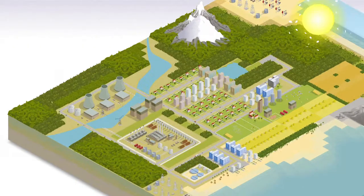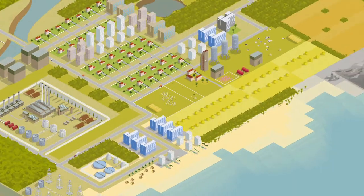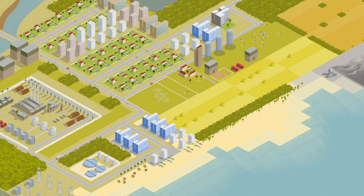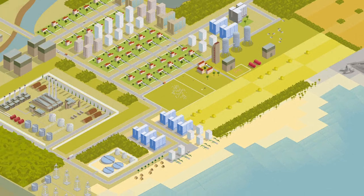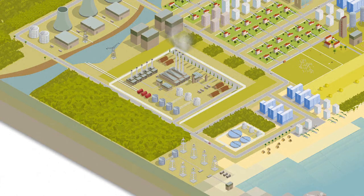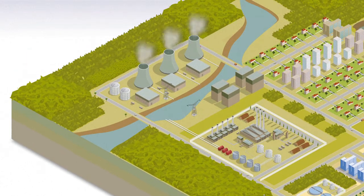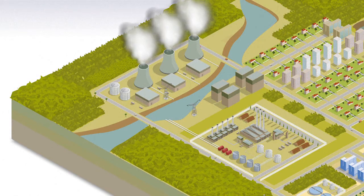A drought occurs when the soil and environment get no or very little water. It can reduce or destroy crop production and affect animals by reducing their feed or by destroying their natural habitat. Droughts can also disrupt water-intensive industrial activities. The paper industry, for example, requires large amounts of water for production, while nuclear plants need water for cooling.